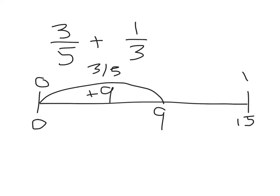Now, we're going to travel one more third. You're thinking, what is one-third of fifteen? It's five. So, you're going to add five to this. If you're at nine and you're adding five more, you get to fourteen. The answer to three-fifths plus one-third is fourteen-fifteenths.